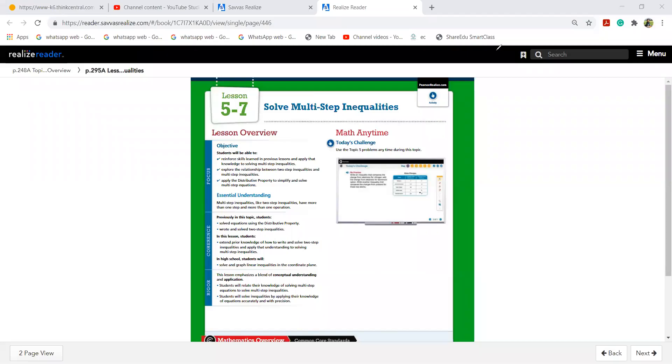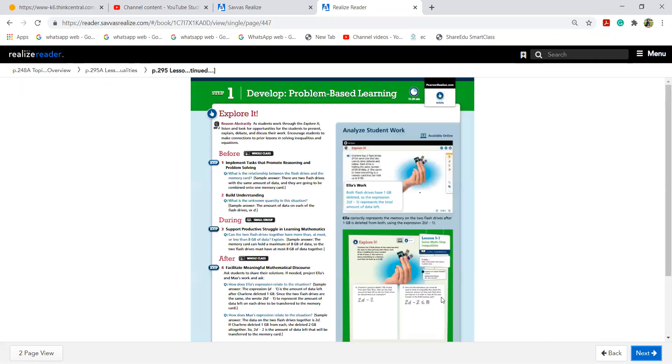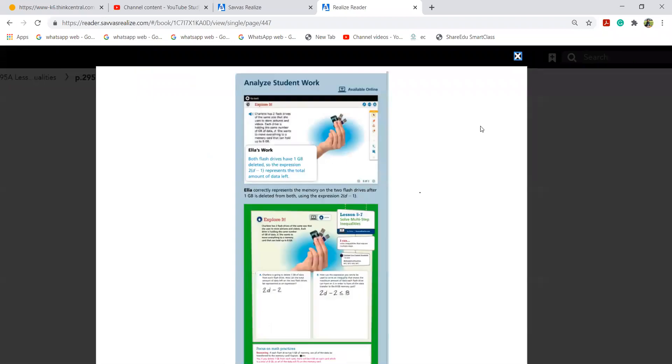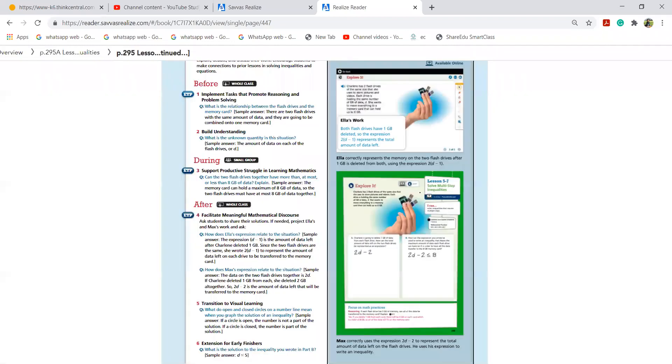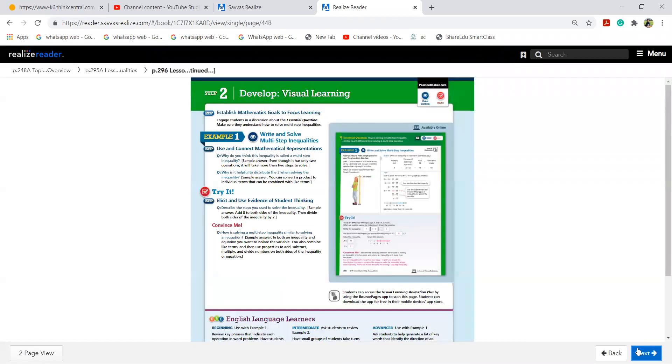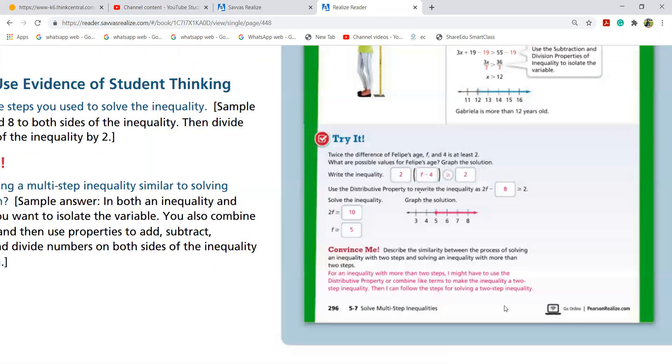So let us begin. Solve multiple or multi-step inequalities. That is lesson number 5.7. I'll let you know the page number now. Turn to page number 296. 296 girls. Are all of you ready now? Yeah, I opened the page. Okay.